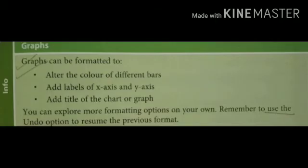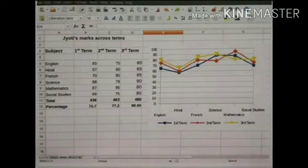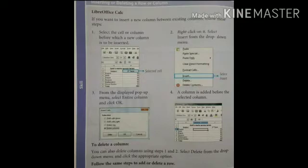The graphs can be formatted in various forms. We can change the color of different bars of the graph. We can also add labels of x-axis and y-axis. And we can also add title of the chart or the graph. According to the marks given, we can also make line graph as it is shown in the picture. If some columns or rows are missing, then you can insert n number of rows or columns in the LibreOffice table. Or you can delete if some unwanted columns or rows are inserted by mistake.